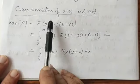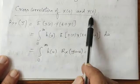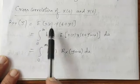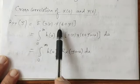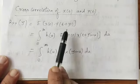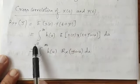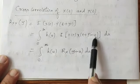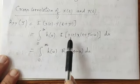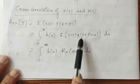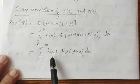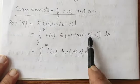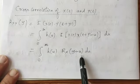Next, we move to the cross correlation of the input signal X and the output signal Y of t. That is denoted by Rxy of tau and is given as the expected value of X(t) · Y(t + tau). Since Y(t) is the convolution of X(t) with the impulse response, this equals the integral of H(U) times the expected value of X(t) · X(t + tau minus U) dU. This expected value is the autocorrelation function Rx of (tau minus U).